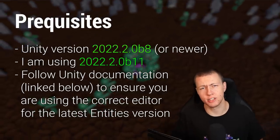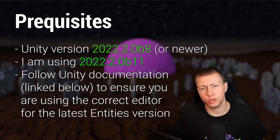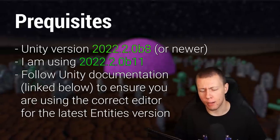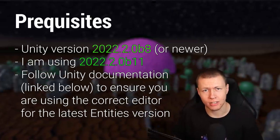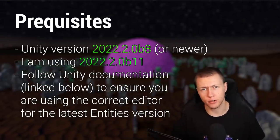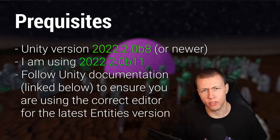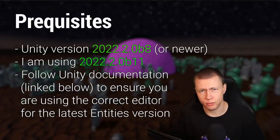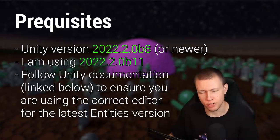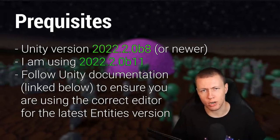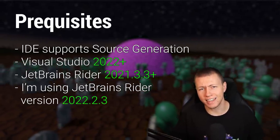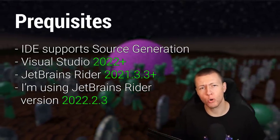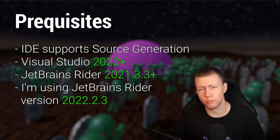The Entities packages I'm using are compatible with Unity 2022.2.0 beta 8 and above. I'm showcasing beta 11 in this video because of bug fixes, so I recommend using the same or newer. Check the Unity documentation for the specific version you should use. You also need an IDE that supports source generation — Visual Studio 2022 and up, or JetBrains Rider 2021.3.3 and up.